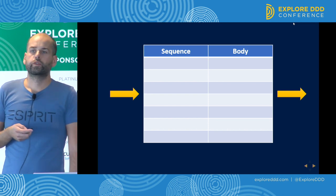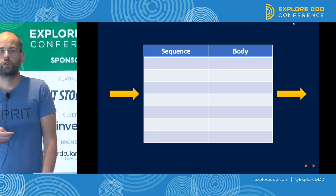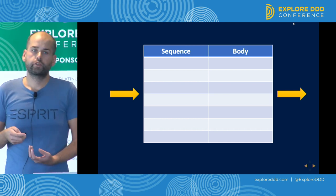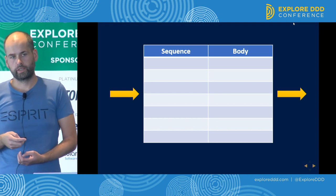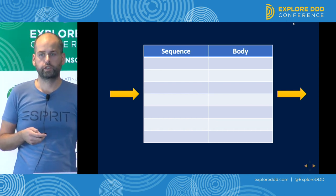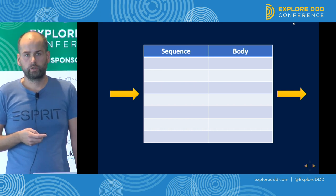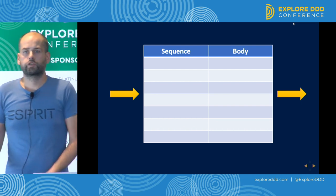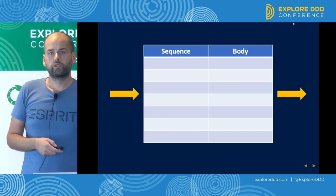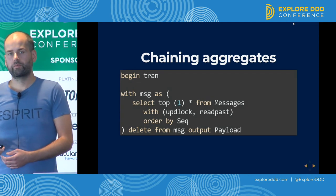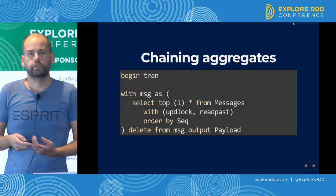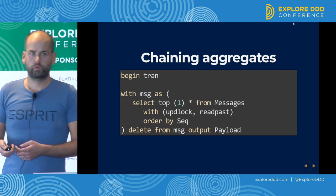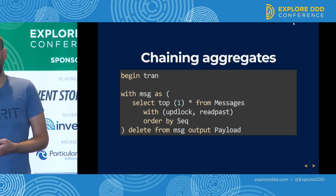The blue team created a simple queue structure in a database. The queue had two columns: a sequence number and a message body. A message would be a row in the table that contains a sequence number — which makes it a queue — and a message body which contains all the information required to continue the business process. The basic unit of work would be: take a message from that queue table, execute logic, and then put a message or multiple messages back to that table.